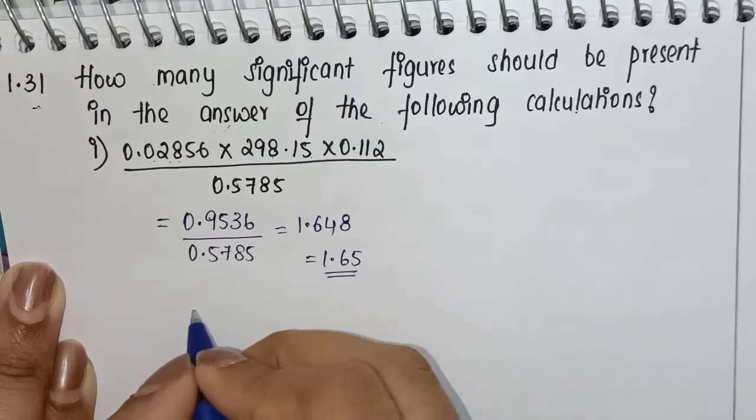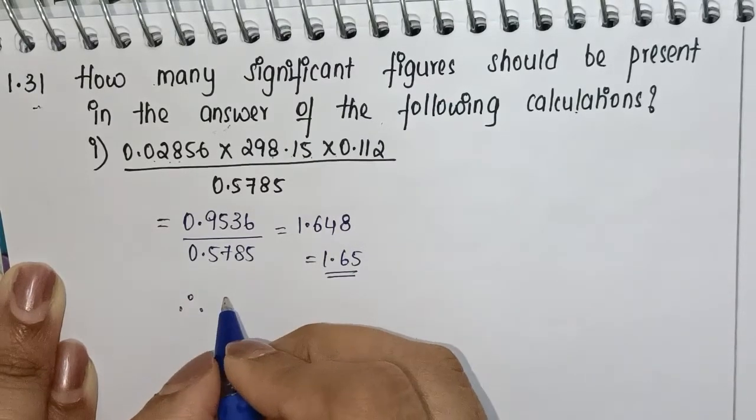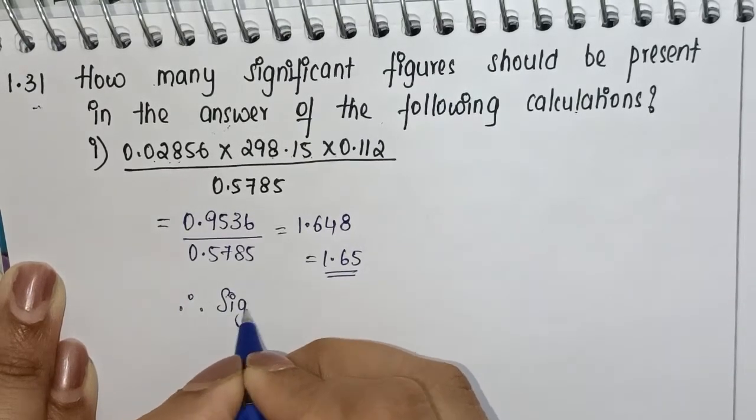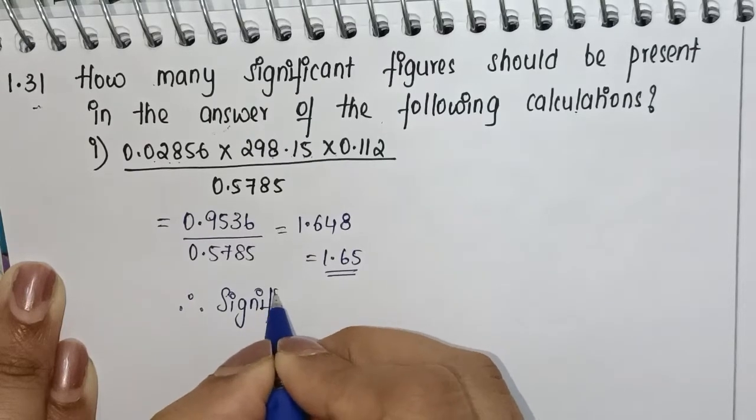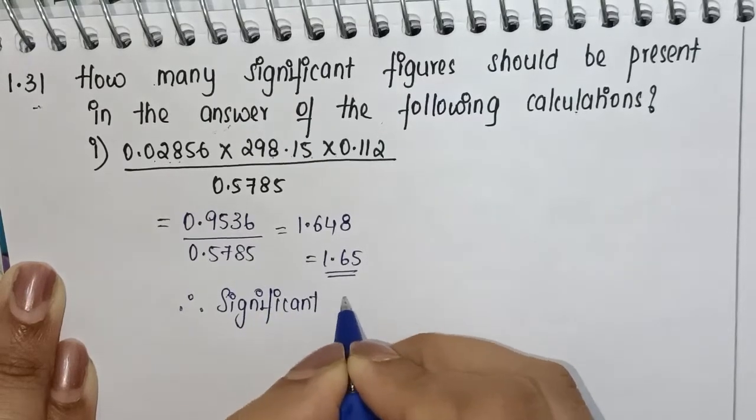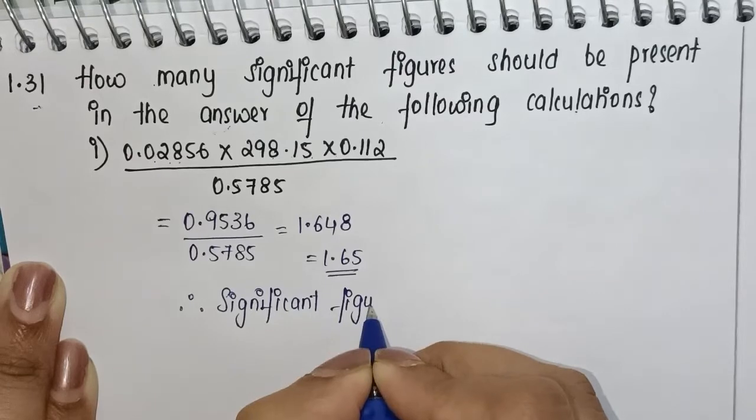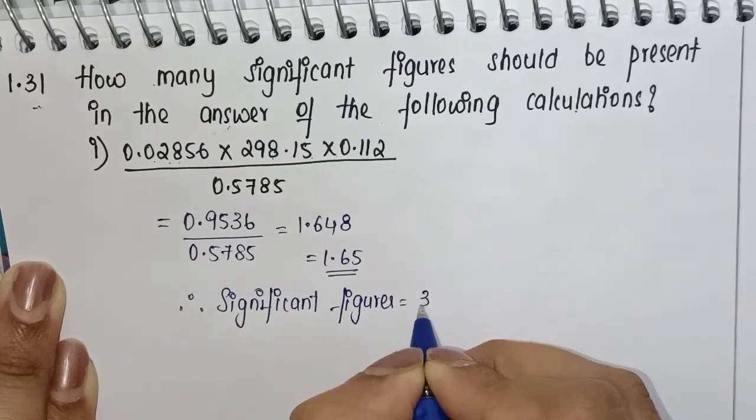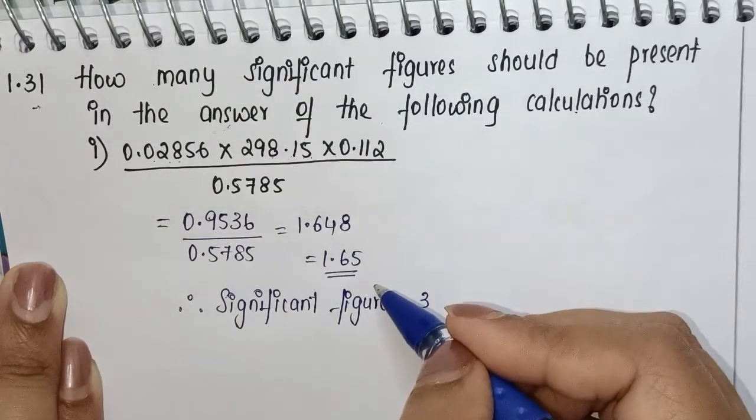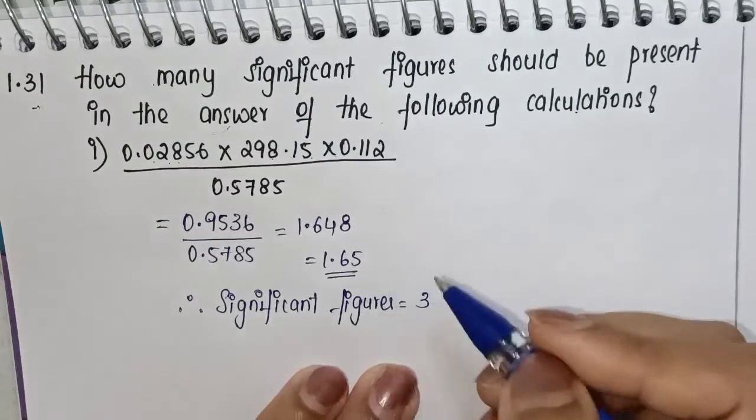If you check here, all these are non-zero digits. Therefore, for this particular question, the number of significant figures is equal to 3.